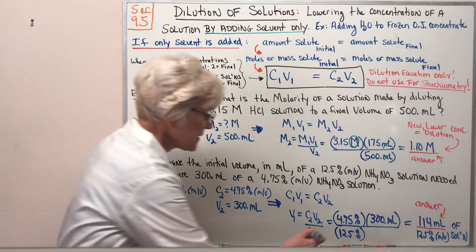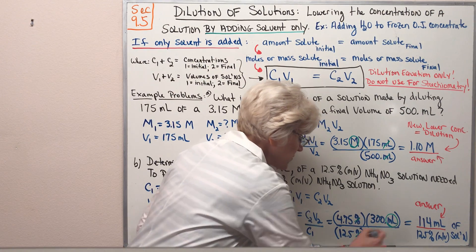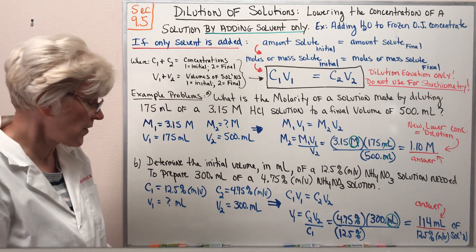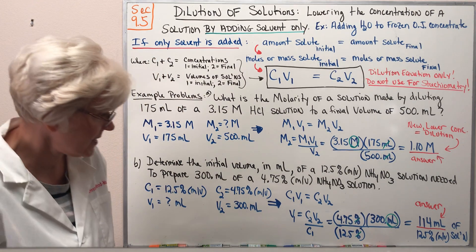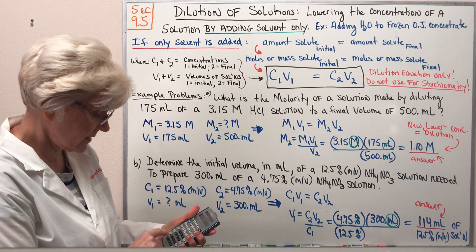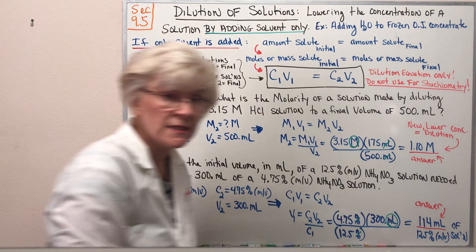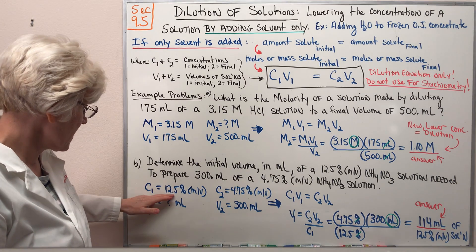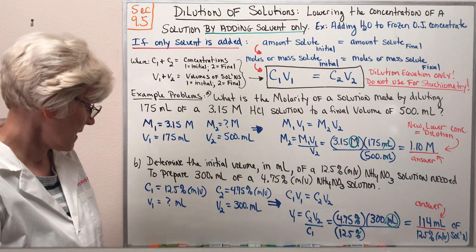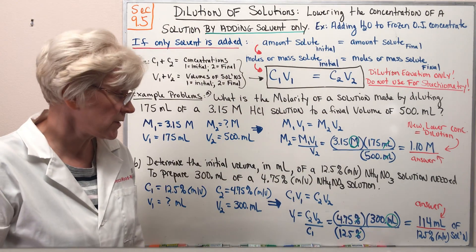Looking at the setup, our mass/volume percent units are canceling. We're left with a unit of milliliters in the numerator. This will be the unit appropriate for our initial volume. Taking a calculator and double checking the calculation: 4.75 times 300 divided by 12.5. I get 114 mL of our initial 12.5% mass/volume ammonium nitrate solution is needed. So answer V1 is 114 mL.